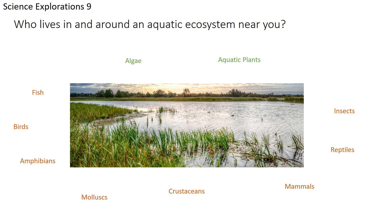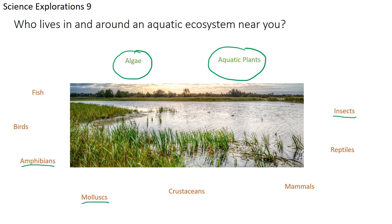Looking at a local aquatic ecosystem near Stephen Lewis Secondary School in Peel Region, the producers are mostly algae or aquatic plants, which capture sunlight and convert it into sugars. These are consumed by insects such as dragonfly larvae and mayfly larvae — our primary consumers. Mollusks like snails and crustaceans like daphnia also consume algae.